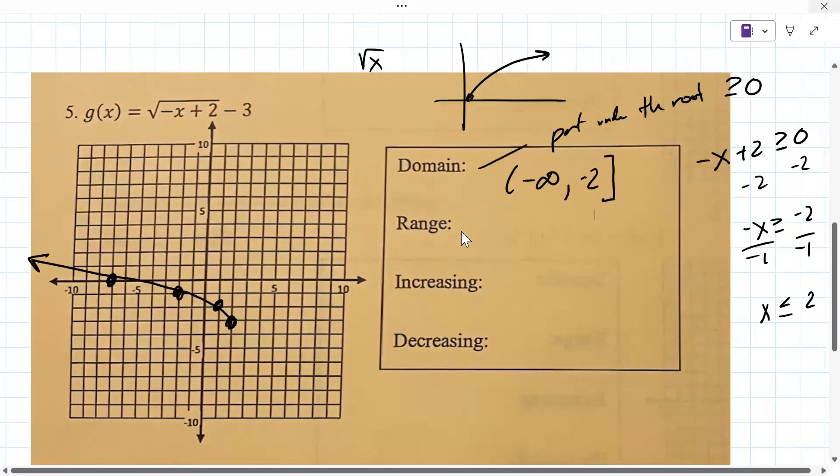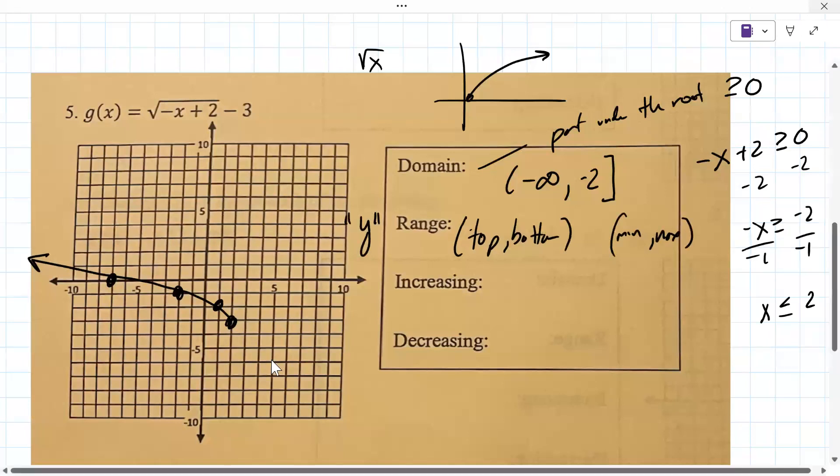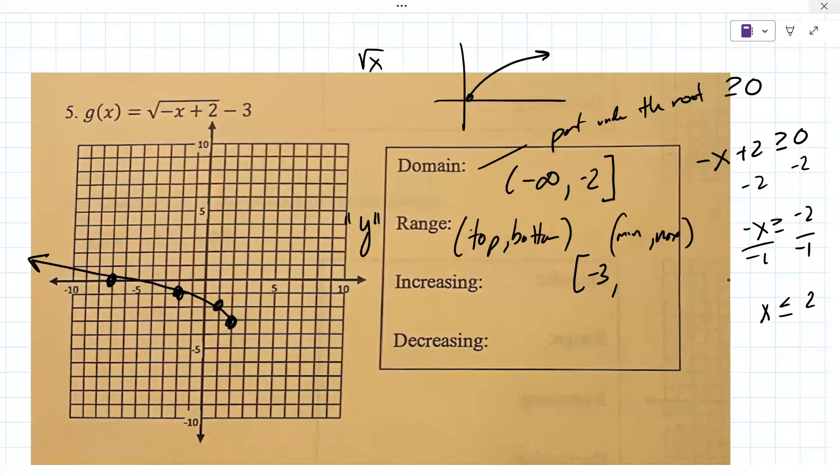The range comes from, if we use words like top, bottom, min, max, it's the y value. The smallest y value is right here at negative 3. And it does include negative 3. And then it's going upwards, so it'd be a normal infinity? Yes.